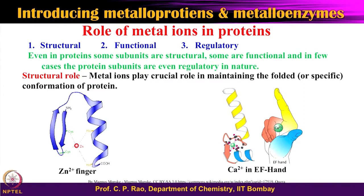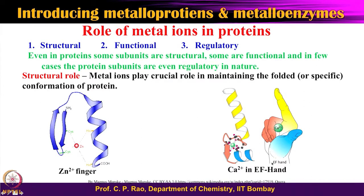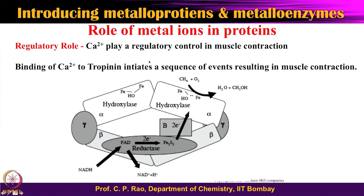Beyond structural roles, metal ions can also be regulatory. For example, calcium²⁺ plays a regulatory role in muscle contraction. Binding of calcium to troponin initiates a sequence of events resulting in muscle contraction. We will take it as granted for now that calcium plays a regulatory role in muscle contraction, and how it does so will be explained at a later stage.